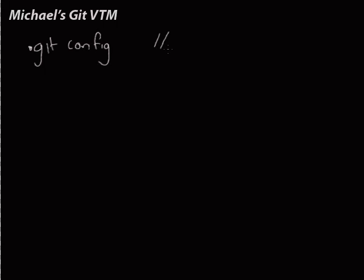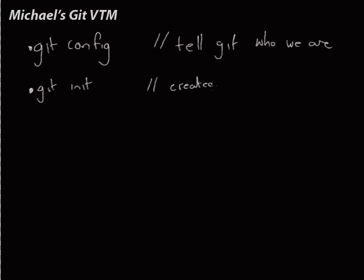Hey guys, welcome to video 3 of this git primer. Let's recap the last video. We used git config to set up some settings and tell git who we were. We used git init, which created a repository for us. We used git status, and git status tells us information about our working copy.